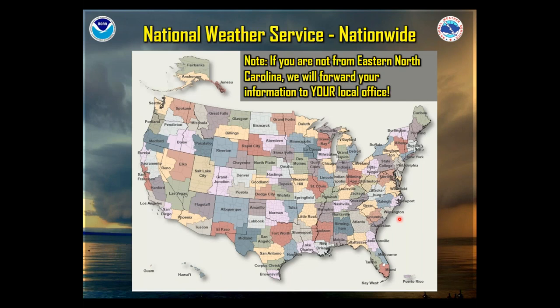We're just one of 122 offices across the country. Here's the Newport office, with Wilmington to our south, Raleigh to our west, and Wakefield, Virginia to our north. We also have offices in Alaska, Hawaii, Guam, Puerto Rico, and American Samoa, so we definitely reach out globally. If you're in this class and not from eastern North Carolina, that's perfectly fine — welcome aboard. We'll forward your information to whatever local office you fall under.